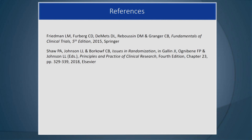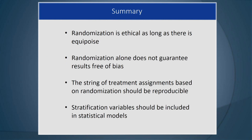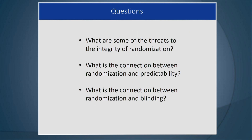That's it for this segment. In summary: randomization is ethical as long as there is equipoise. Randomization alone does not guarantee results free of bias — if you start selecting those you're going to analyze, you may create bias. The string of treatment assignments should be reproducible, and stratification variables should be included in statistical models. Questions to consider: what are the threats to the integrity of randomization? What is the connection between randomization and predictability? And what is the connection between randomization and blinding? Thank you for watching!